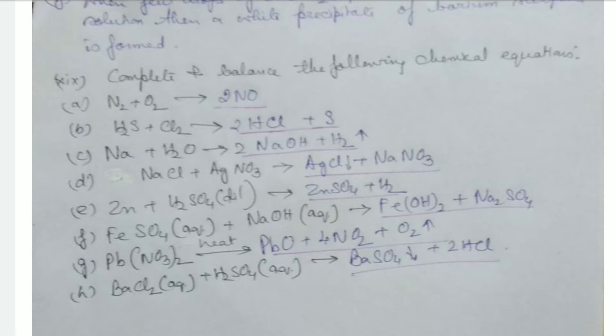So today I will start with complete and balance the following chemical equations. Nitrogen combining with oxygen will form 2NO, nitrogen monoxide, then H2S plus Cl2 will give us 2HCl plus S.